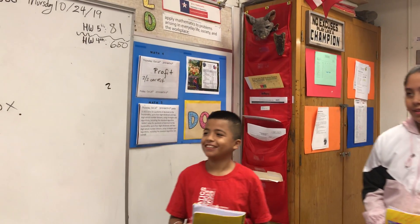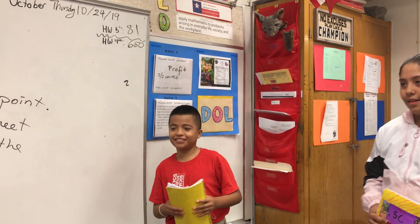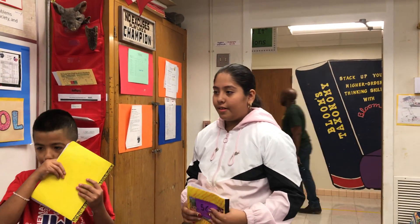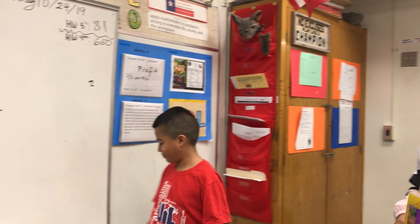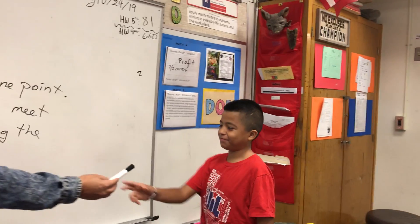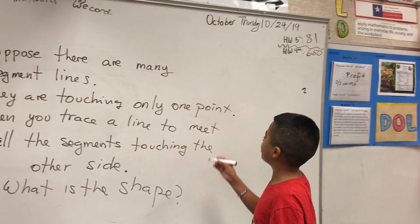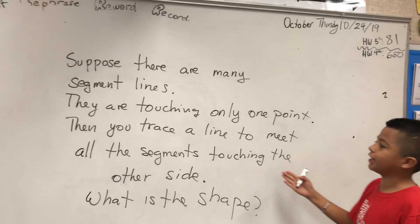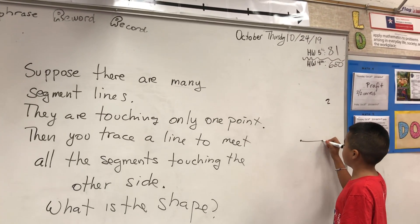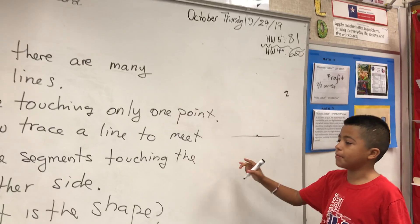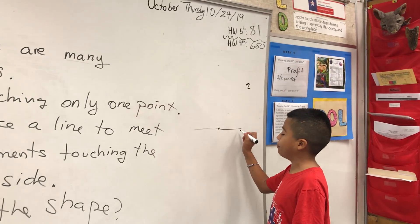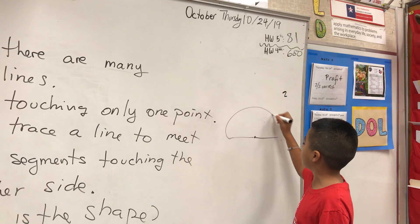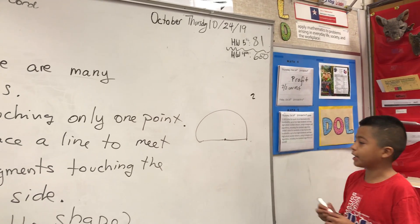It is a circle. Okay, what's your answer? A circle. Can you explain? Well, if you want to meet it again you can't just go back like that, so you have to go like this — and that could make half of a circle.